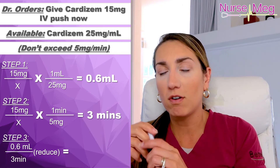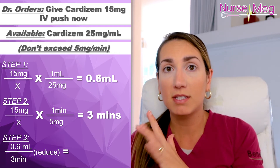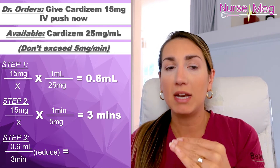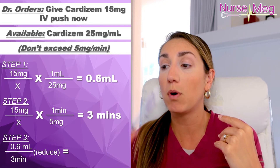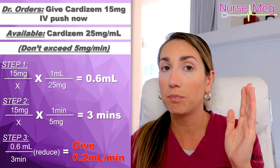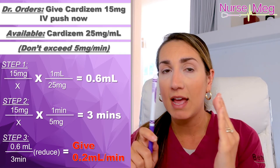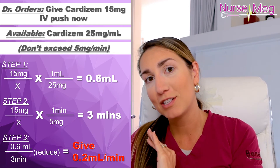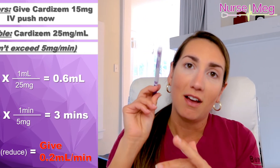Let's reduce that further to know how many mLs per minute to push. 0.6 mLs divided by 3 minutes equals 0.2 mLs per minute — that is how much you will push. So you're going to push the whole 0.6 mLs, which is 15 milligrams of Cardizem, over three minutes at 0.2 milliliters per minute. That's a more complicated one, but hopefully writing it out explains it and you can screenshot it and work through it yourself.